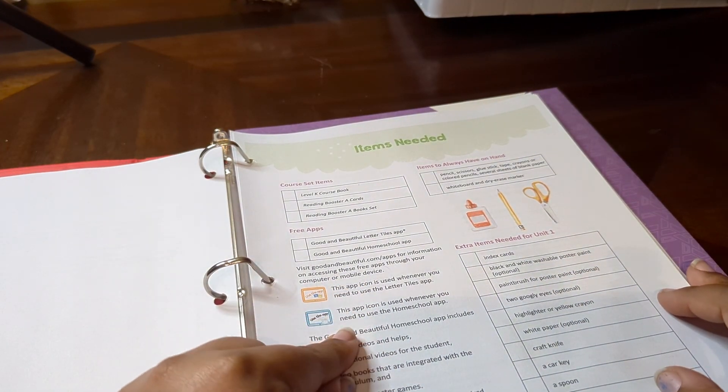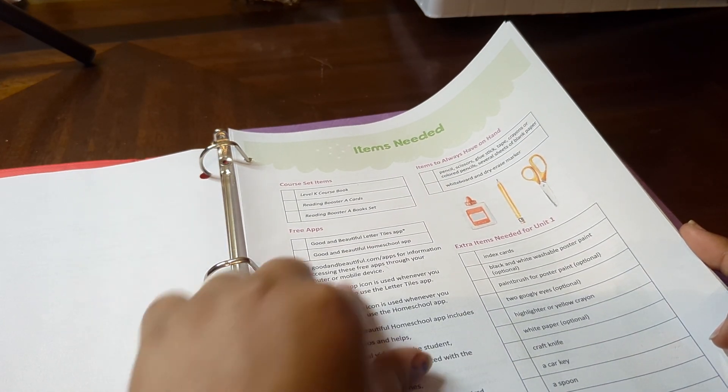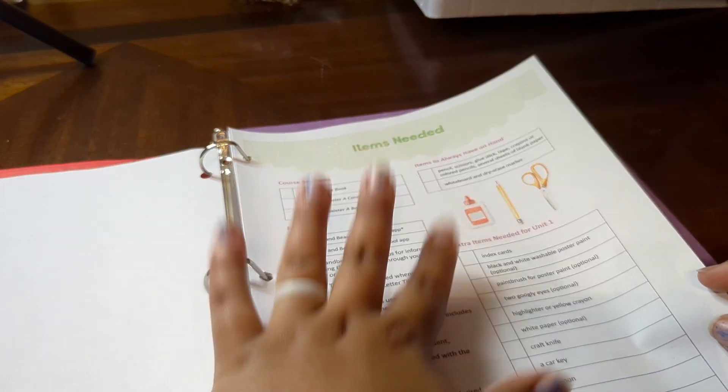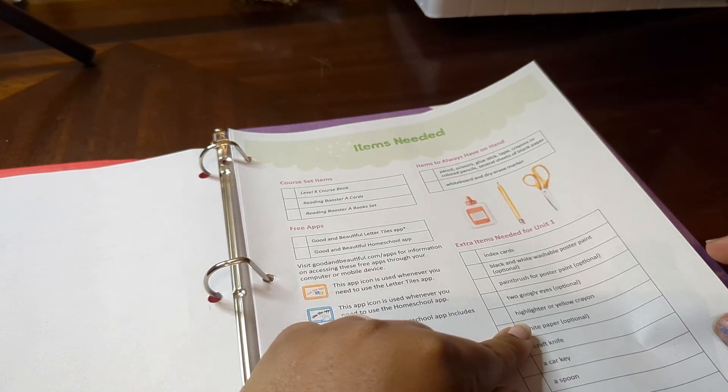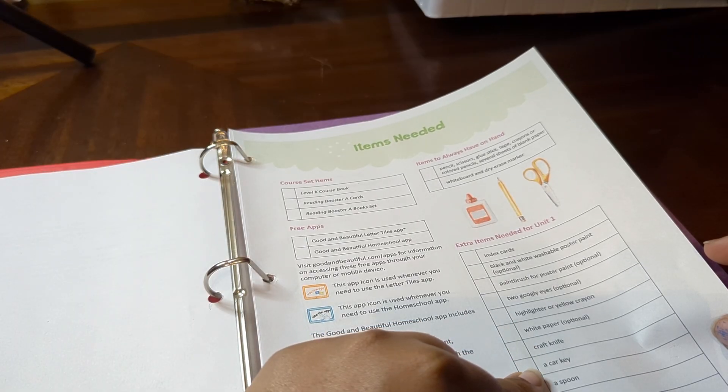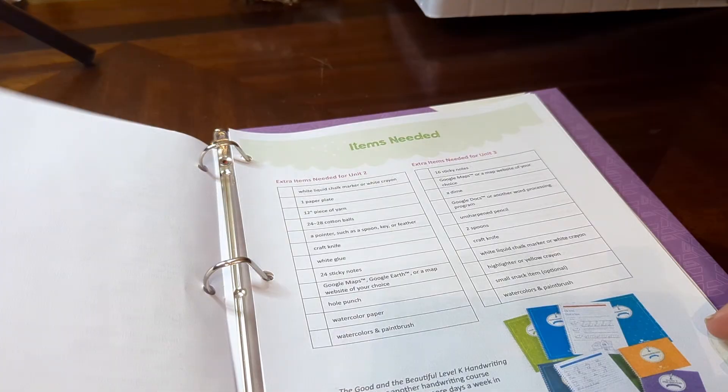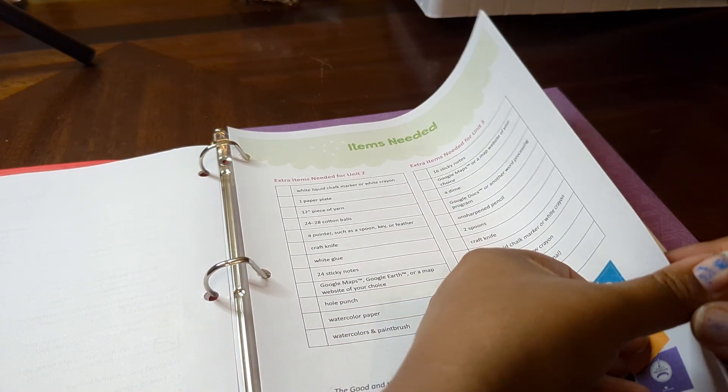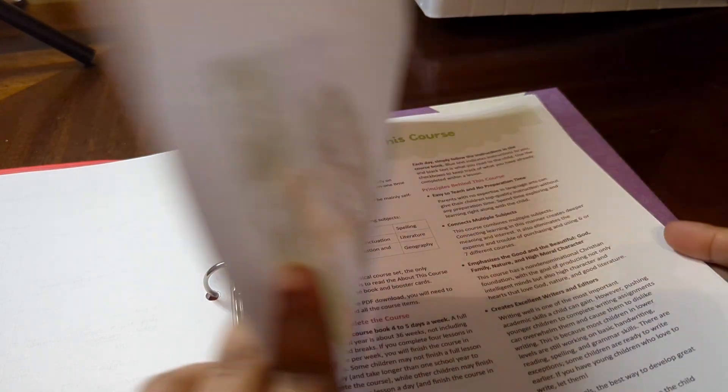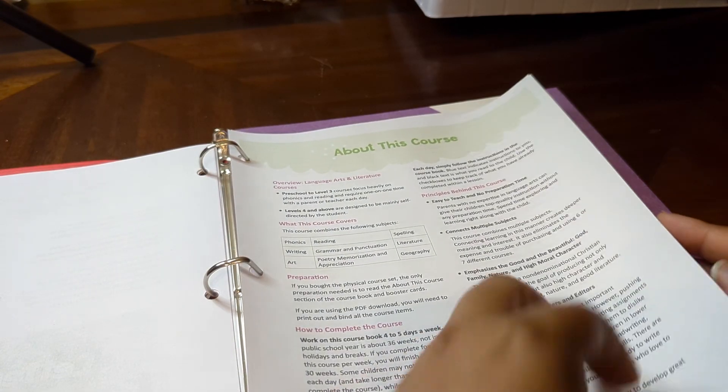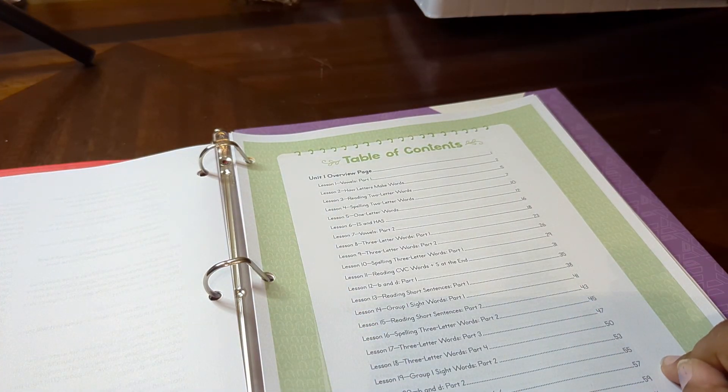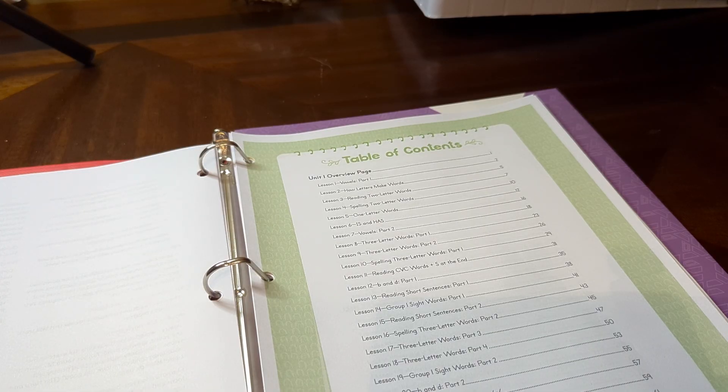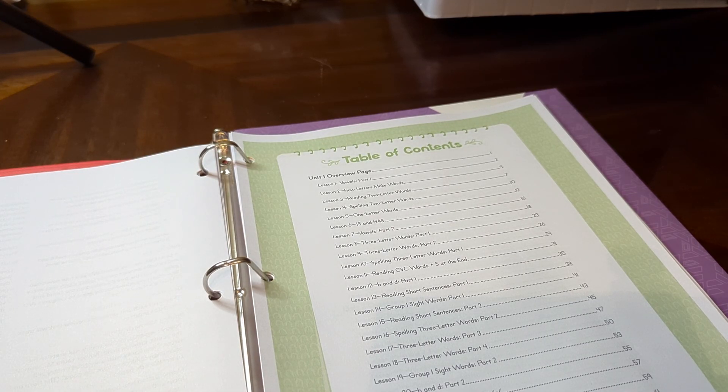It tells you that you're going to be using a couple apps. There's a new tile, like word tile app or letter tiles app that we are not familiar with because I've never used the level K. Here's just a couple little extra items that you're going to need for unit one and looks like some fun stuff like paint and googly eyes, a craft knife, a car key, a spoon, a leaf, just fun stuff like that. And it goes through every unit and goes over the letter tiles app.